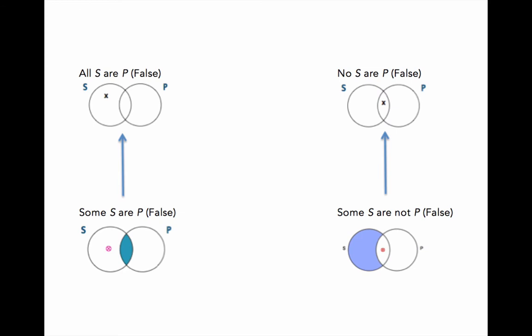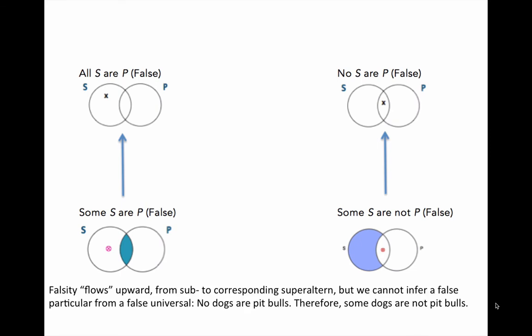Some ordinary language examples will help. Remember, falsity flows upward from subaltern to corresponding superaltern, but we cannot infer a false particular from a false universal. For example: 'No dogs are pit bulls, therefore some dogs are not pit bulls.' It is false that no dogs are pit bulls, but it is true that some dogs are not pit bulls — so we cannot say a false universal entails a false particular. Like subalternation, superalternation is not valid on the modern interpretation.